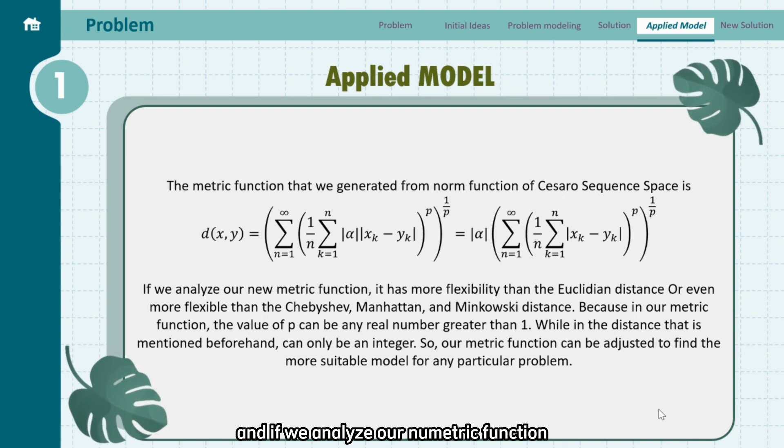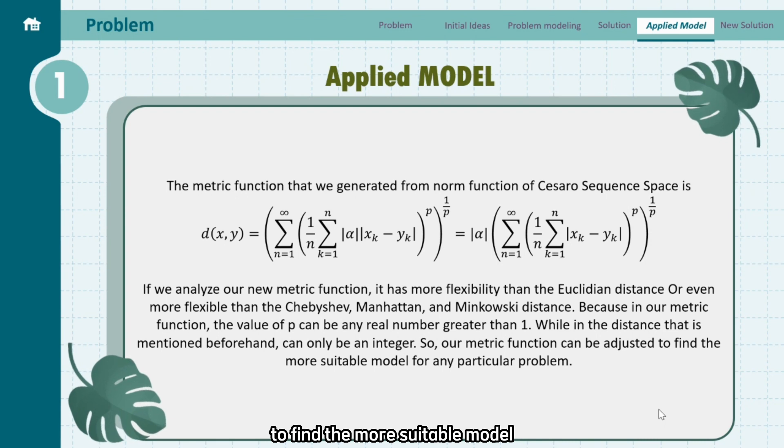And if we analyze our new metric function, it has more flexibility than Euclidean, Chebyshev, Manhattan, and Minkowski distance, because in our metric function the value of p can be any real numbers greater than 1, while in the distance that we mentioned beforehand the value of p can only be an integer. So our metric function can be adjusted and used to find the more suitable model for any particular problem. Since we have generated a new distance measure, why don't we try and give it a shot?